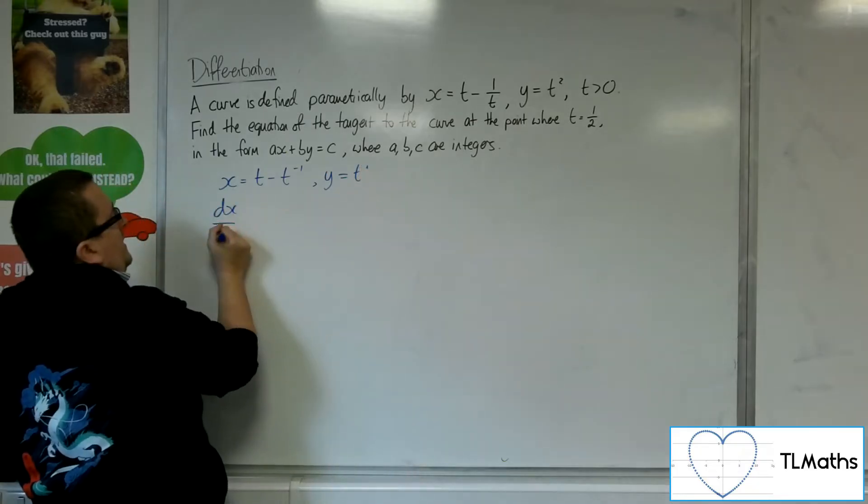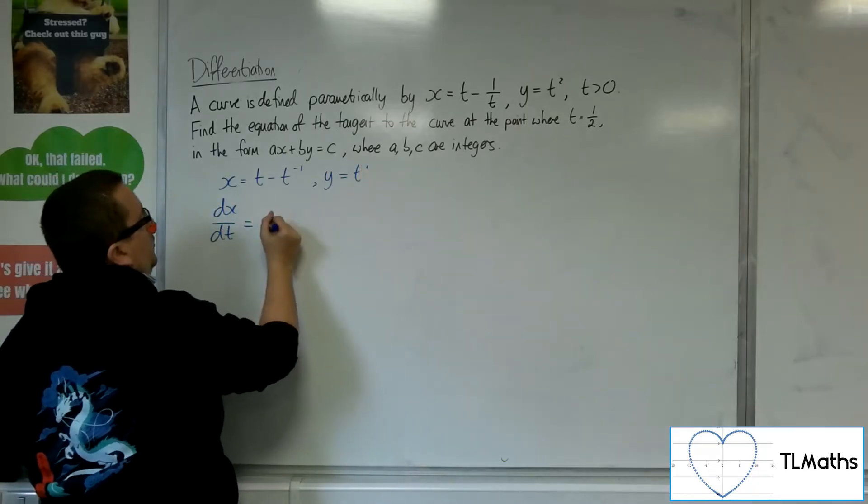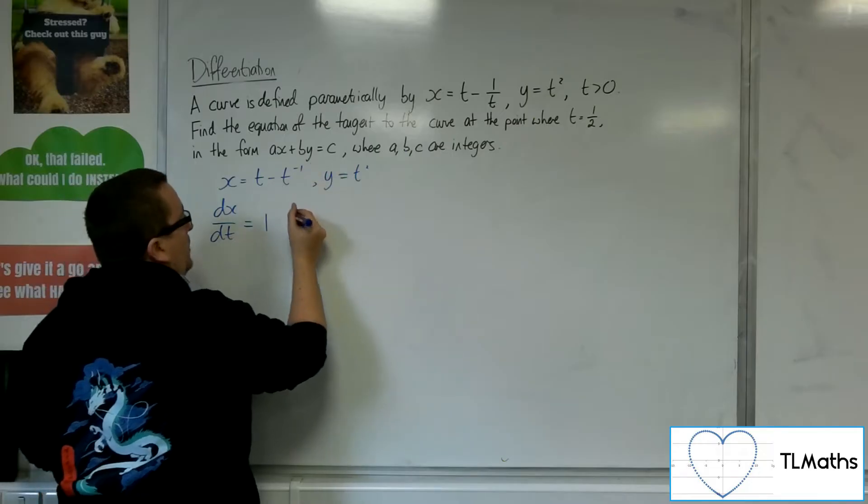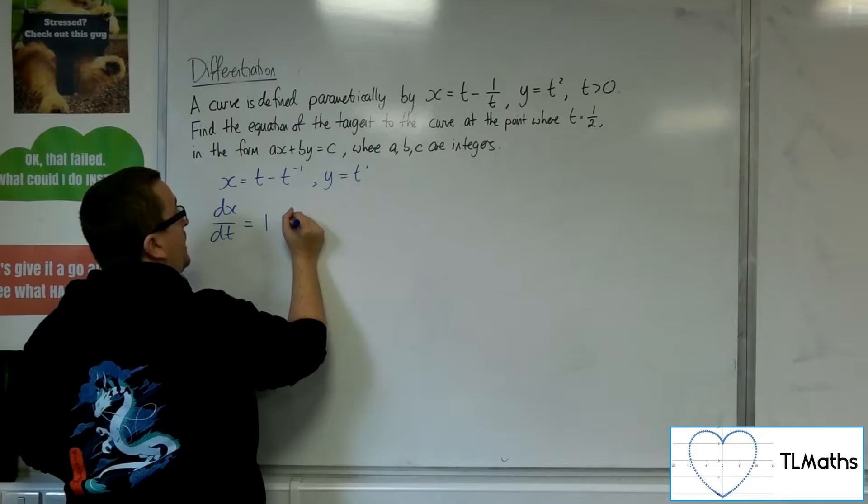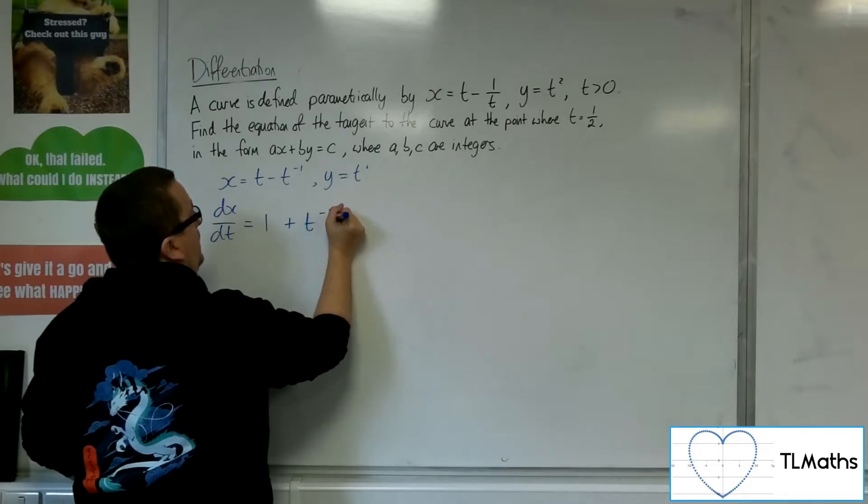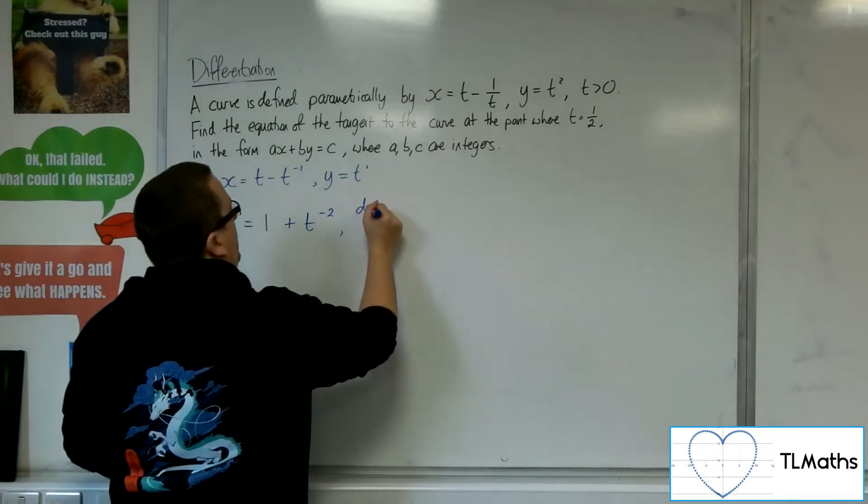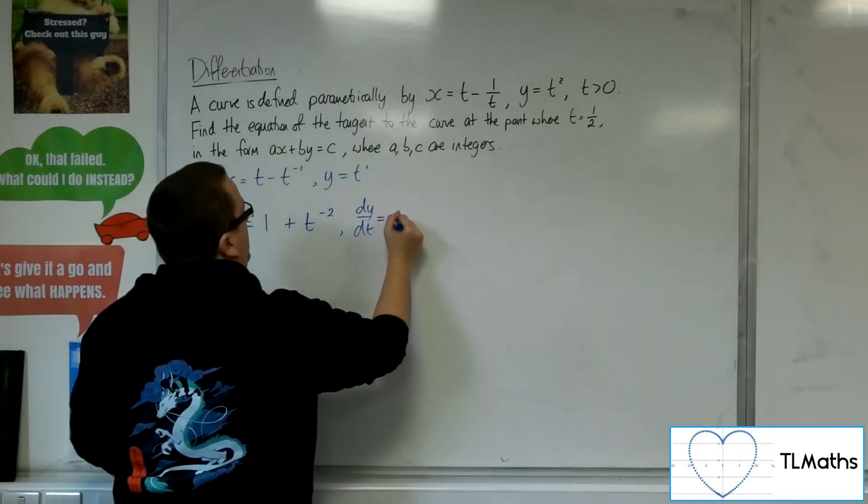So, dx by dt is equal to 1. The minus 1 comes down to the front, multiplies with the minus 1 coefficient. So, plus t, take 1 off the power, so t to the minus 2. And dy by dt is 2t.